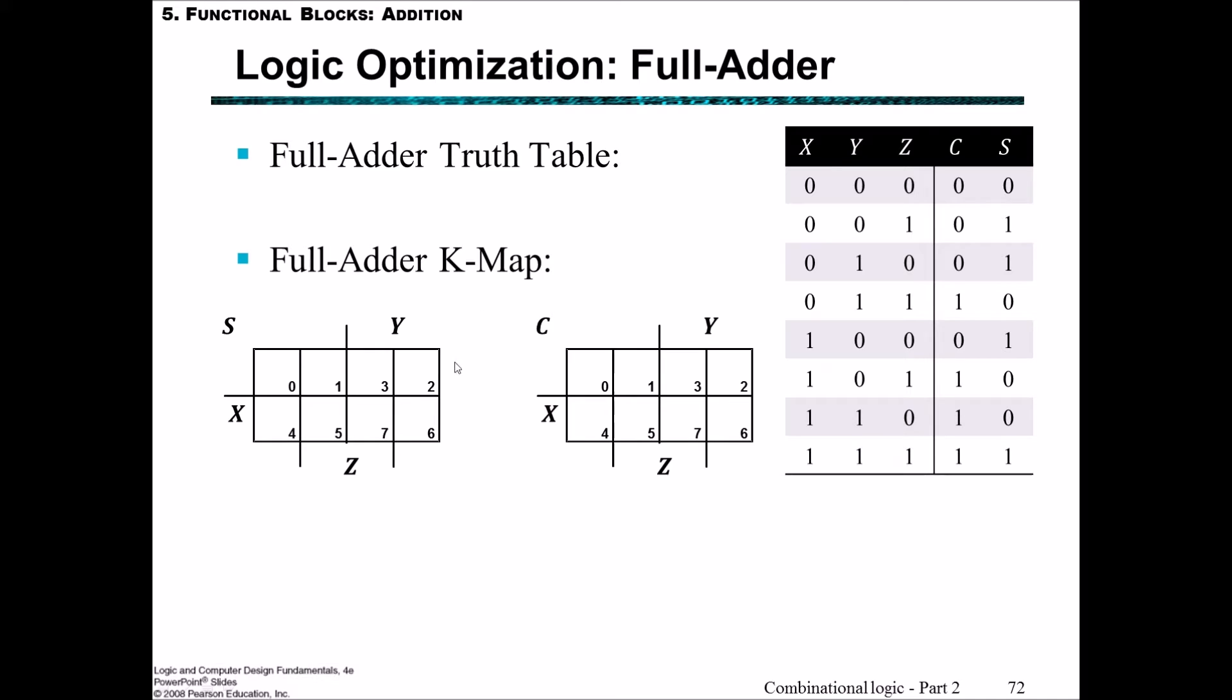Let's fill in this K-map for S. S equals one in indexes one, two, four, and seven. C equals one in indexes three, five, six, and seven. The answer is correct. We'll see if we can draw some rectangles around this to simplify it slightly. There's no eight, no four, no two, so they're all just min terms.